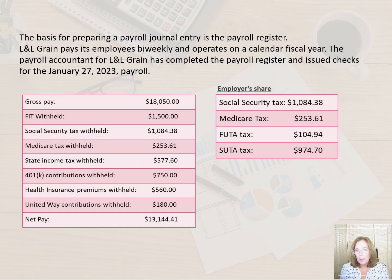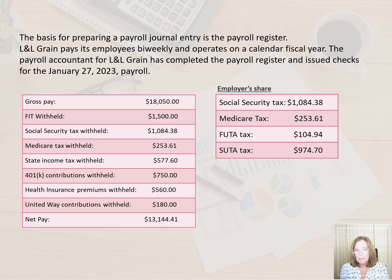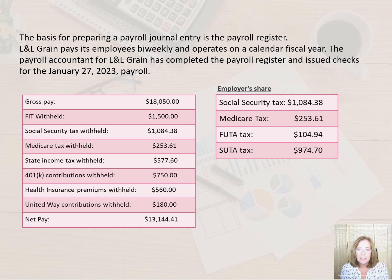The basis for preparing a payroll journal entry is the payroll register. If the company is using payroll software, the journal entry may be automatically prepared and can be posted to the general ledger when the accountant approves it. If the company is using a payroll vendor, the vendor may provide the journal entry. However, the accountant must be able to understand what should be recorded and double-check the journal entry to ensure that it is indeed correct.